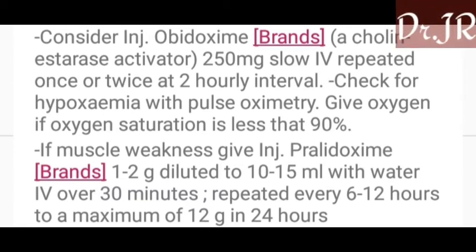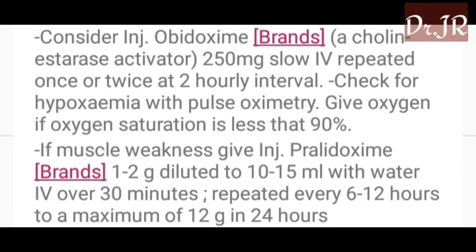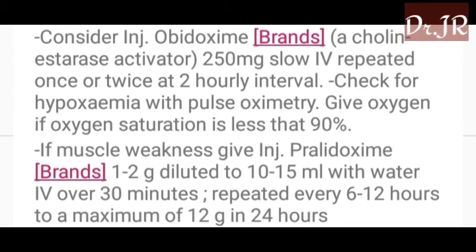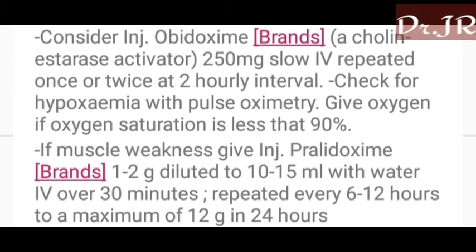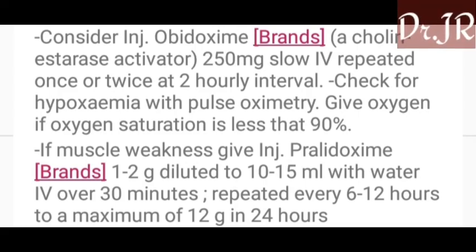If muscle weakness is present, give injection pralidoxime 1 to 2 grams diluted to 10 to 15 ml with water IV over 30 minutes, repeated every 6 to 12 hours to a maximum of 12 grams in 24 hours.